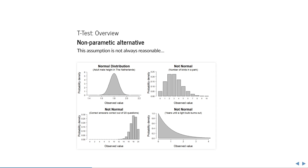For example, consider the number of birds in a park. First, you cannot count 1.5 birds, so this is not a continuous but a discrete distribution. Second, you cannot count minus one bird, so the distribution stops at zero. If the mean is close to zero, the distribution will have a strong right skew, which means it is no longer symmetric. The same problem arises with the number of correct answers out of 20 questions, which follows a binomial distribution — bounded in two directions, discrete, and asymmetric when the mean is close to 0 or 20. And the number of years until a light bulb burns out follows an exponential distribution — continuous but clearly not symmetric.